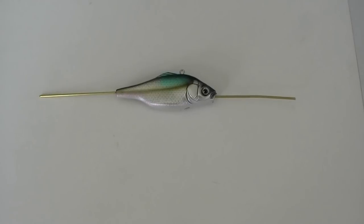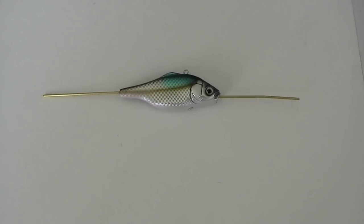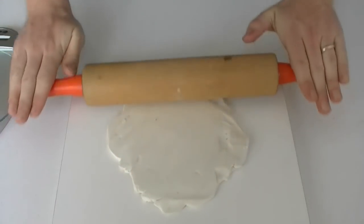In this video we are going to make a silicon mould of this fishing lure. Start by rolling out a bed of modelling clay onto a board.